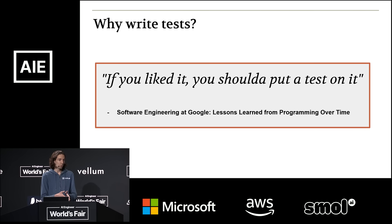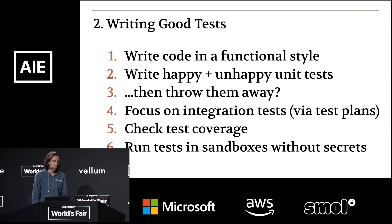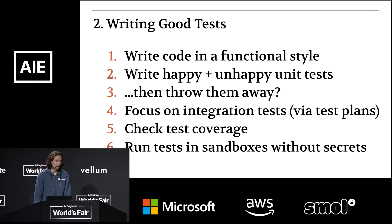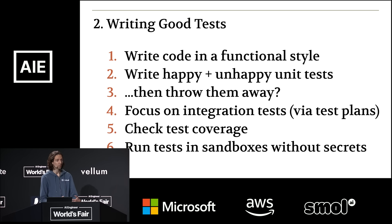Testing becomes much more important with coding agents because you don't want your agent to change the behavior of your system in ways you don't understand or expect. First, one of the things you can do is write code in a functional style — meaning code that has no side effects. This makes it much easier to run LLMs and understand if the code is successful. You really don't want to be running a test that has access to your live Gmail environment where a single mistake could delete all your email. You want to isolate side effects and focus on the functional transformations that matter.